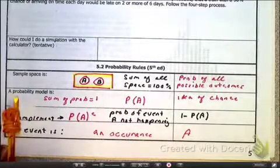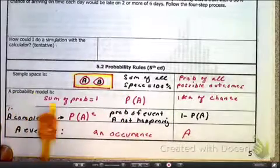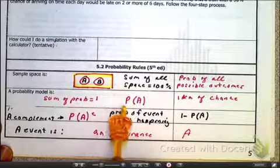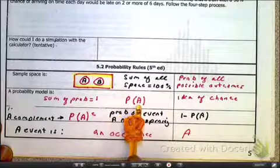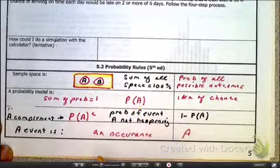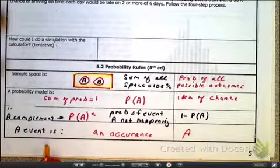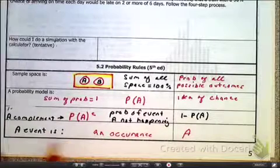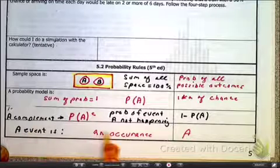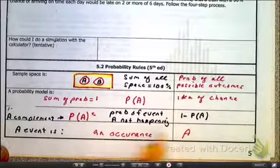Okay. Let's just continue. Probability model. Well, first of all, you know the sum of all probabilities is equal to 1. Our notation, probability of event A. And overall, what is probability? It's an idea of chance. I had to switch these two because I wrote things down so nicely. So here, like I said, an event is an occurrence, and I have event A.